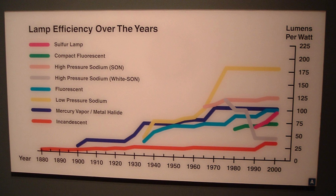An electric kettle is more than 90% efficient — comparatively little heat energy is lost during the 2 to 3 minutes a kettle takes to boil water. A premium efficiency electric motor is also more than 90% efficient.